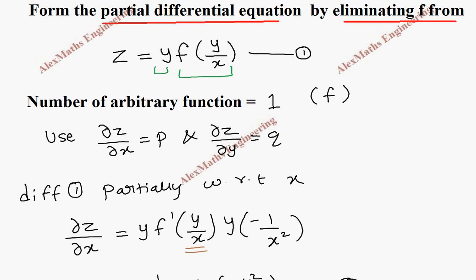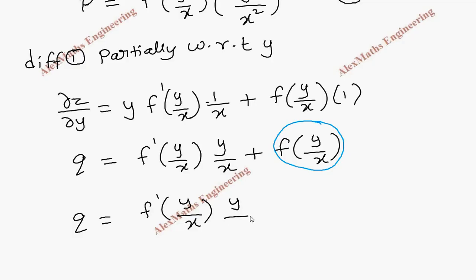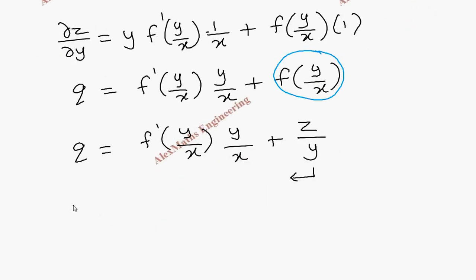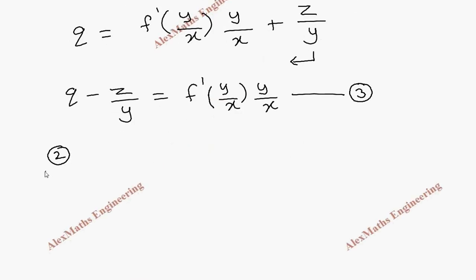From the original equation, the entire term f of (y/x) is nothing but z divided by y. So this term can be replaced as z by y. We then get q equal to f dash of (y/x) into (y/x) plus z by y. Taking z by y to the other side gives q minus z by y equal to f dash of (y/x) into (y/x). This is named as the third expression.